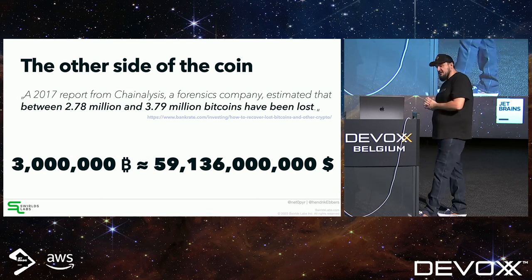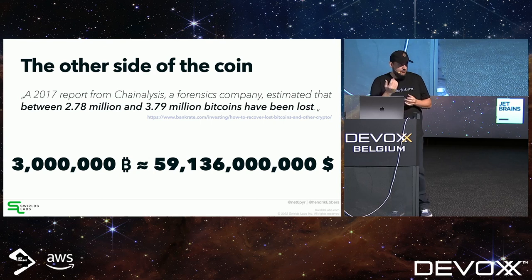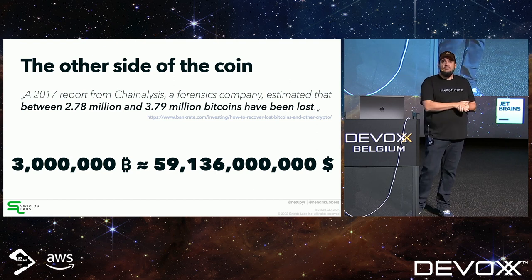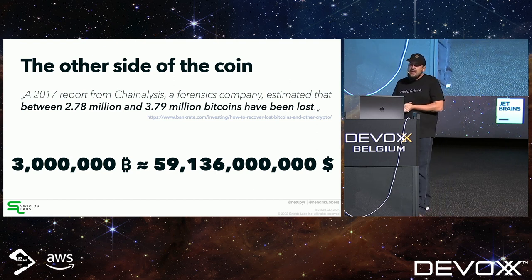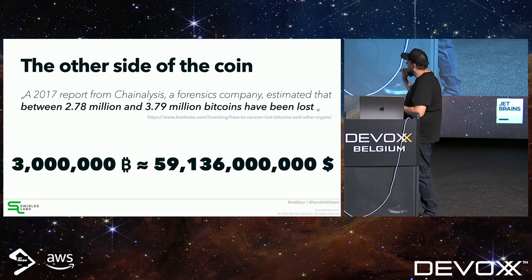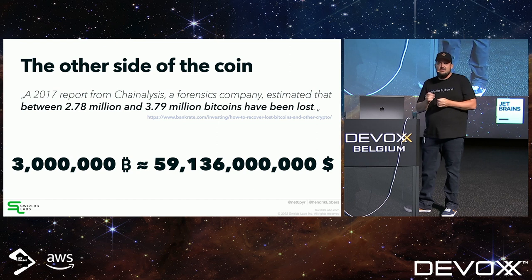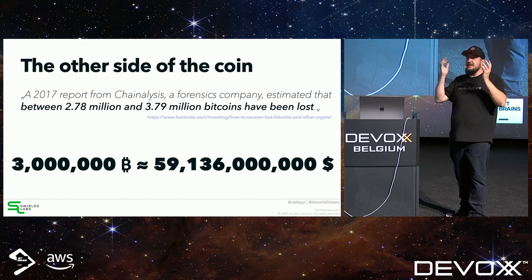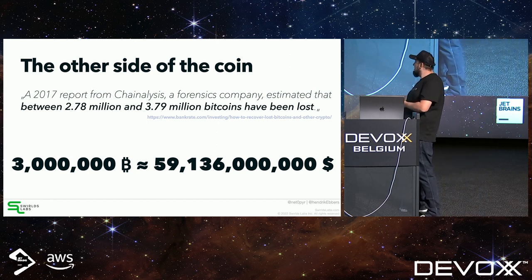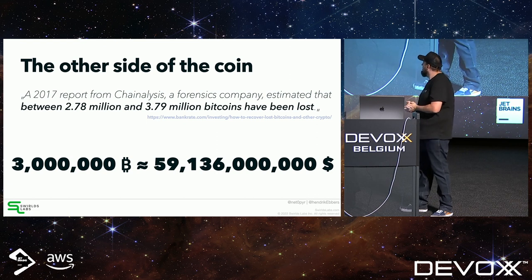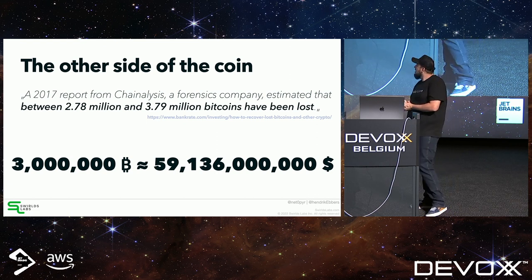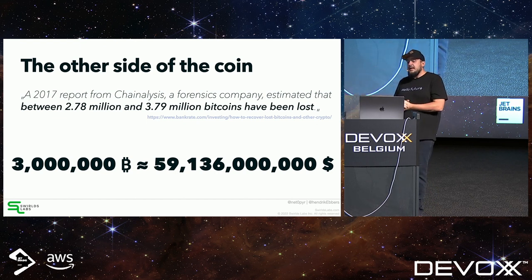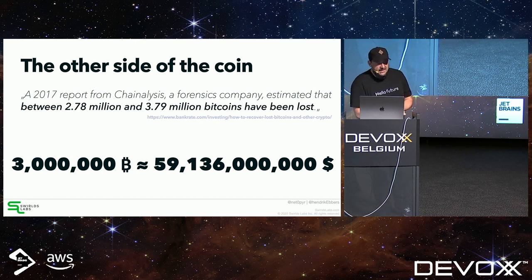One problem with Bitcoin: since there is no bank, if you lose access to your keys — on a hard drive, a USB stick — nobody can help you recover your money. Until now, around three million Bitcoins have been lost by people deleting hard drives or losing their public and private keys. That's an estimated 59 billion dollars just lost.